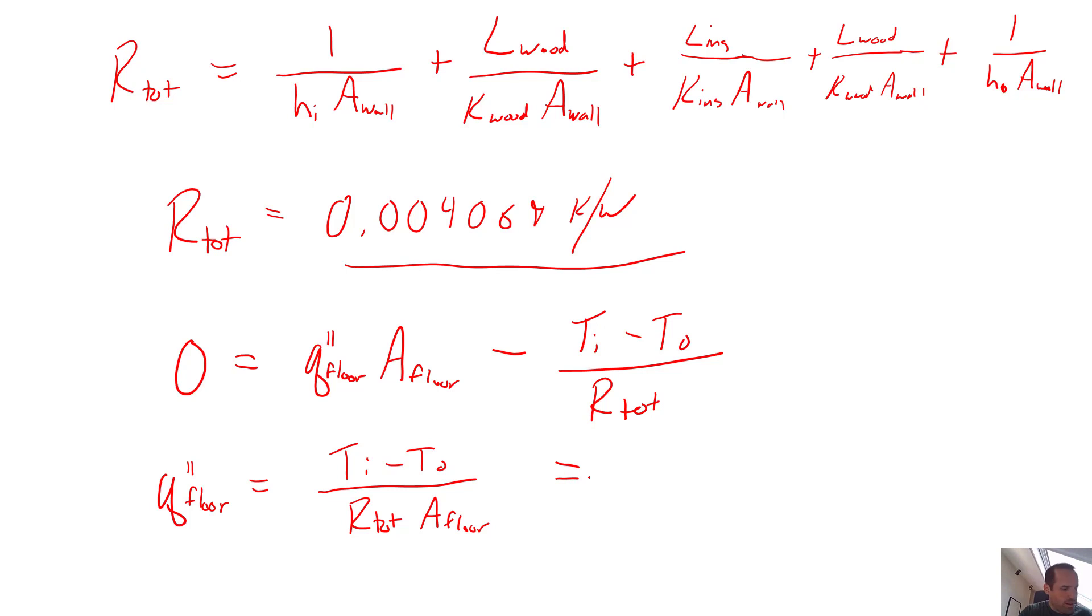So doing the math, again I did this offline, but we end up needing a floor heating system that can provide a flux of 86 watts per square meter. You can see the value of this thermal resistance method, you can see the value of just knowing about heat transfer to solve practical design and energy saving problems.